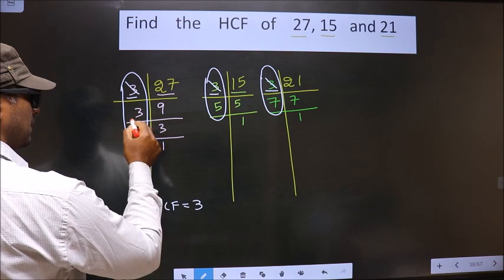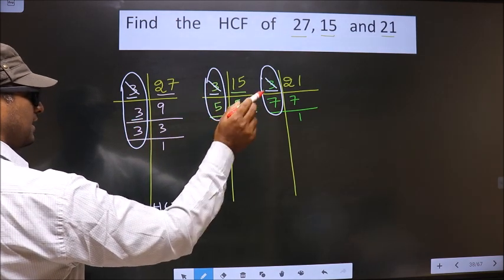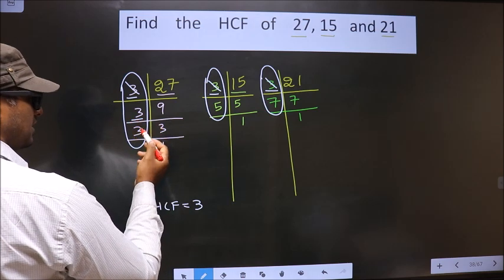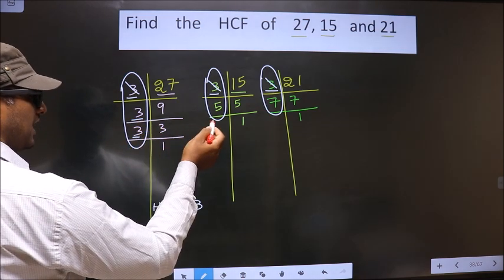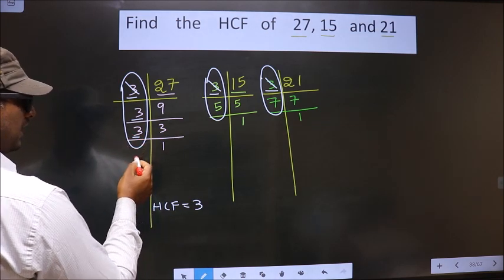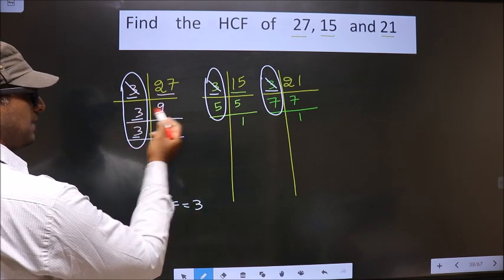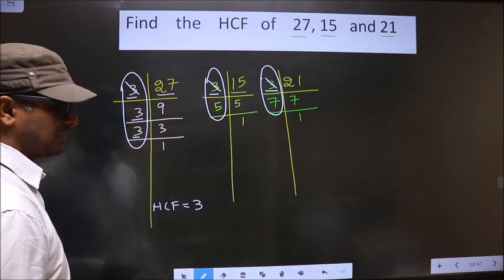Now next number is 3. Do we have 3 here? No. No need to check in the other place. Go to the next number 3. Do we have 3 here? No. So go to the next number. We do not have any more numbers present. So only one number 3 is present in all the 3 places.